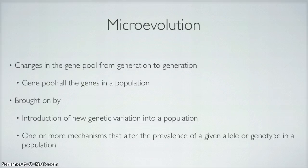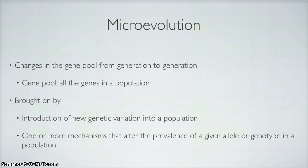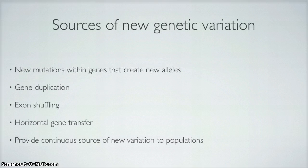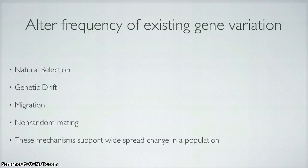Microevolution changes the gene pool from generation to generation. The gene pool is all of the genes in a population. This is brought on by new genetic variation and by mechanisms that alter the prevalence of a given allele or genotype. Sources of new genetic variation include new mutations within genes, gene duplication, exon shuffling, and horizontal gene transfer. What alters the frequency of existing gene variation includes natural selection, genetic drift, migration, and non-random mating — these mechanisms support widespread change in a population.